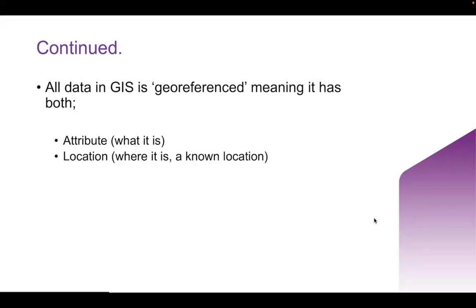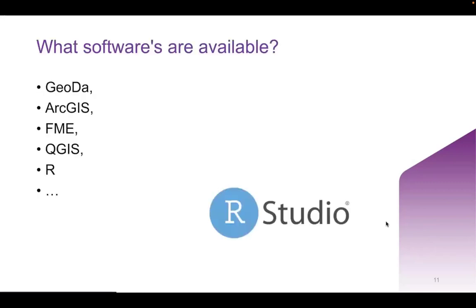In relation to crime data, the attributes that you might see could consist of where the call is received, who received the call, or the type of crime. There are various softwares available for running GIS. I tend to use RStudio, and I've dabbled in ArcGIS a little bit. This workshop will be using RStudio on Wednesday's demonstration, because there is an increasing amount of packages available for spatial analysis and mapping, and it's also a really great tool for visualization.